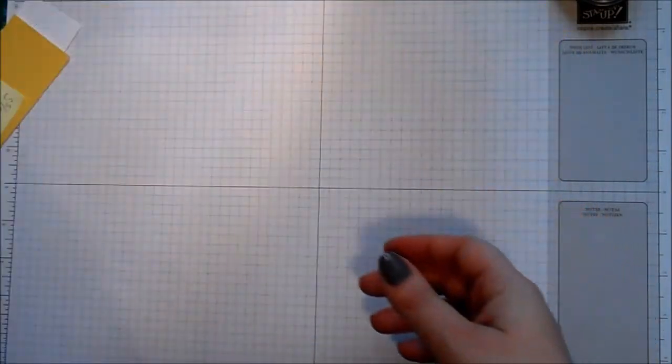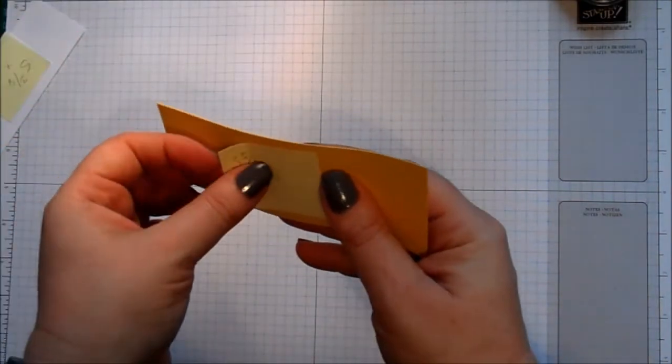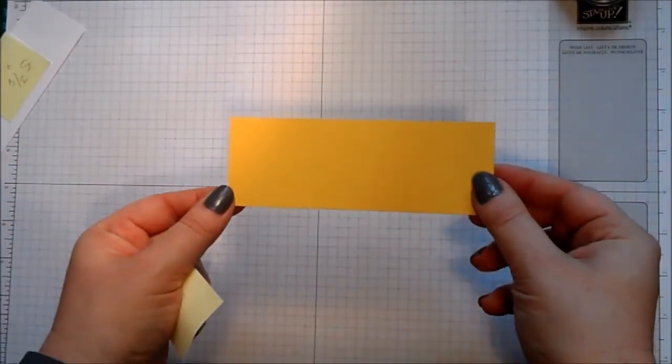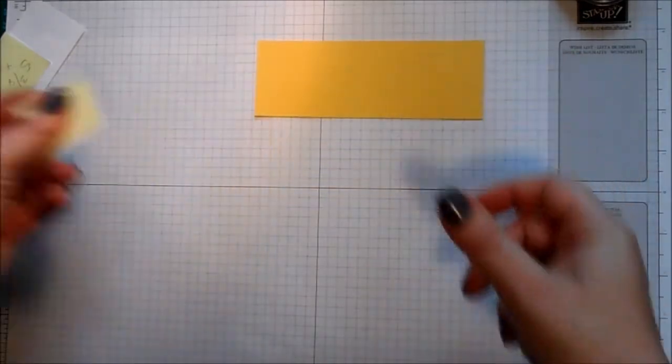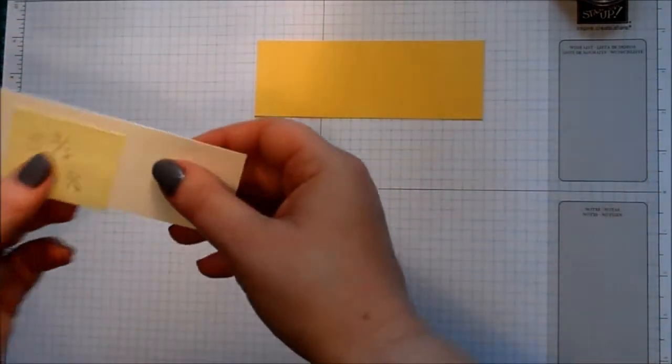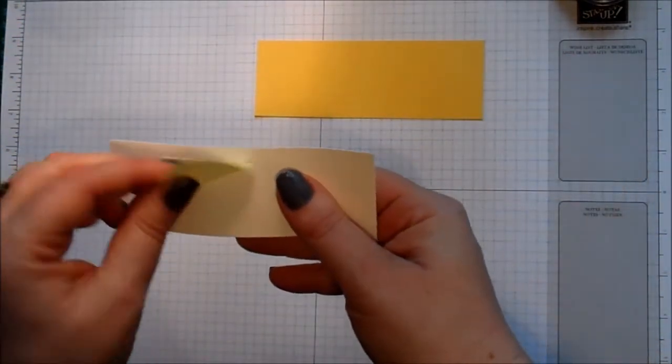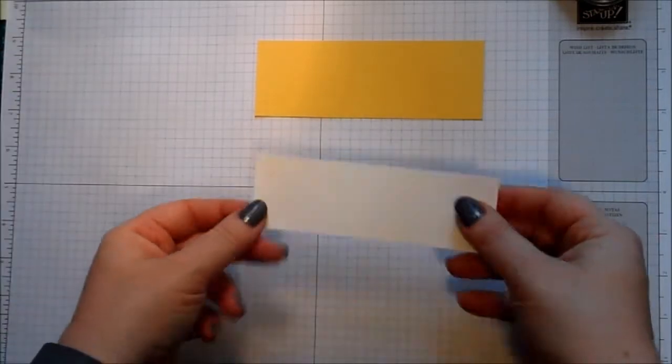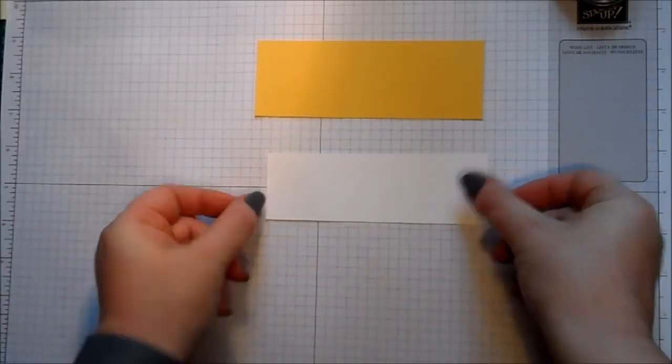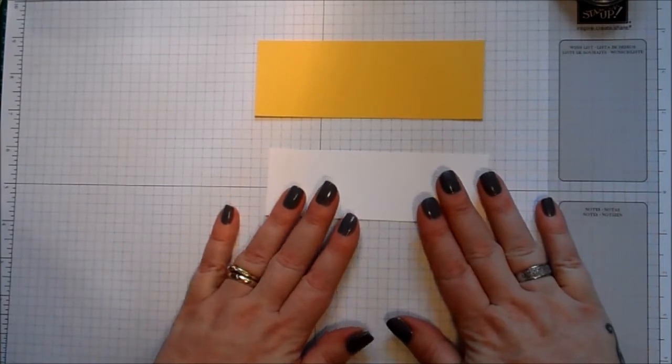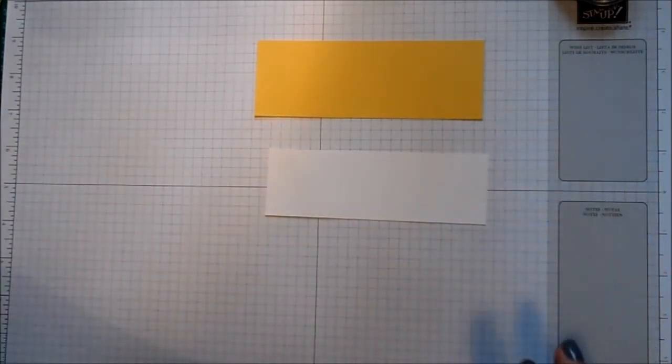And then for the band across the middle of the card, it's another piece of Daffodil Delight measuring 5 and 5/8 by 2 inches, and then a piece of whisper white which we're going to be doing the stamping on, which is 5 and 3/8 by 1 and 3 quarters. Now the stamp set I'm using today is the Bravo stamp set.